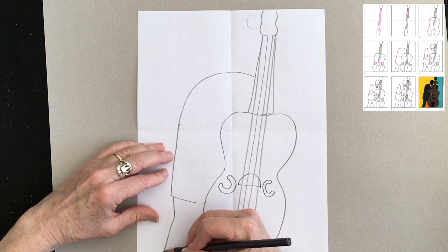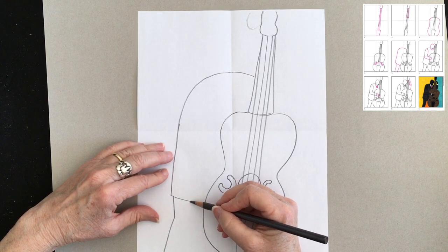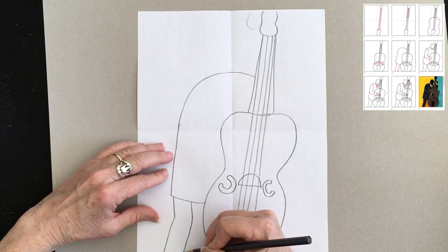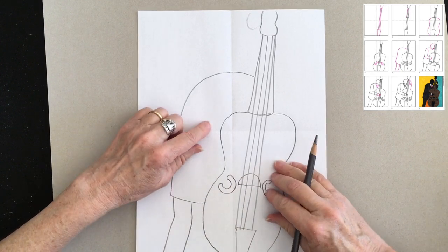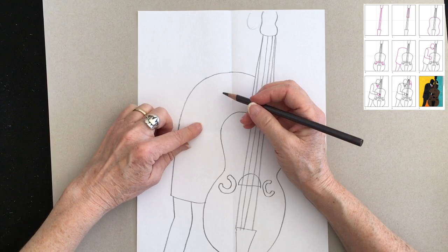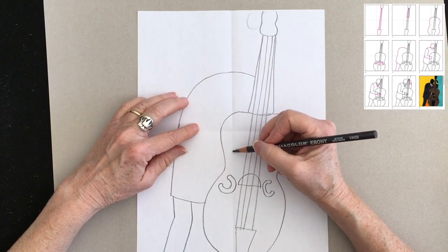Now, one leg is going to show, but I bet you've figured out that this musician's other leg is behind his bass, so we're not going to see it, and we're not going to have to draw it.